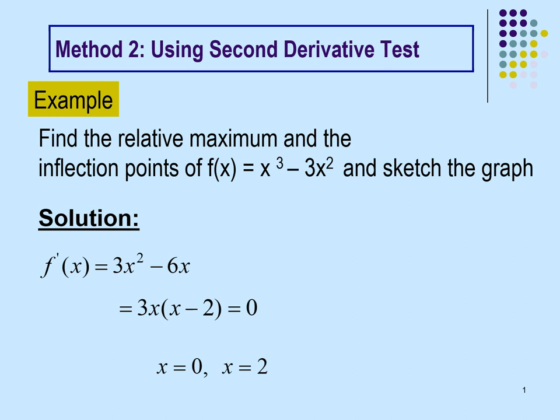Previously in Chapter 4, Application of Differentiation, we learned about equation of tangent and normal, how to find relative maximum and minimum using the first derivative, and how to find the inflection point. For this week, we're going to learn about method 2 using the second derivative test.